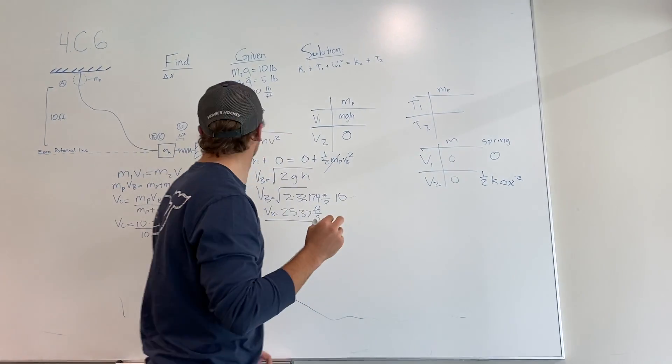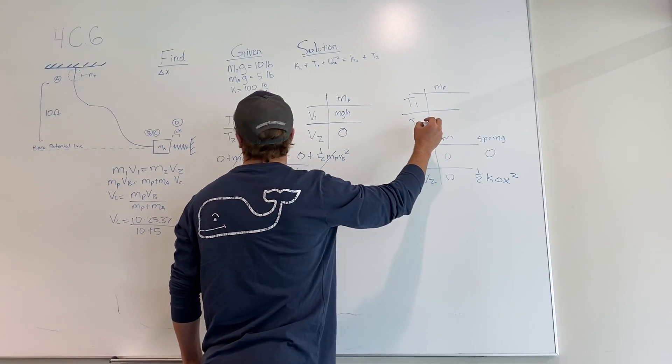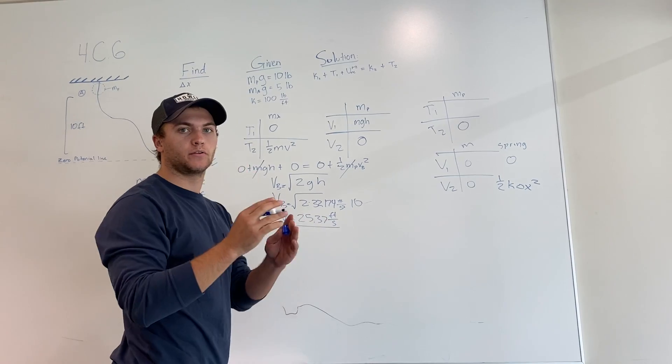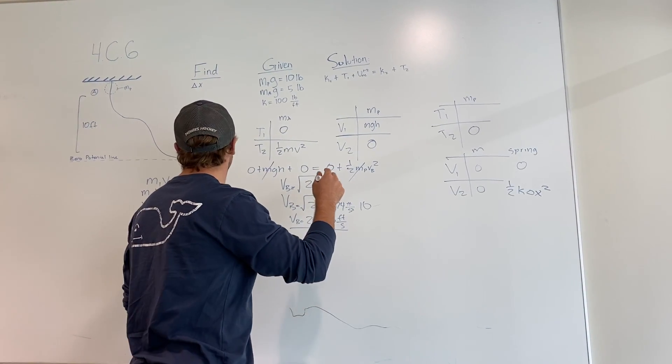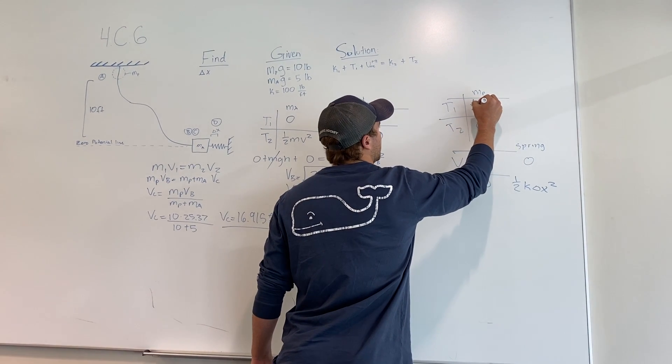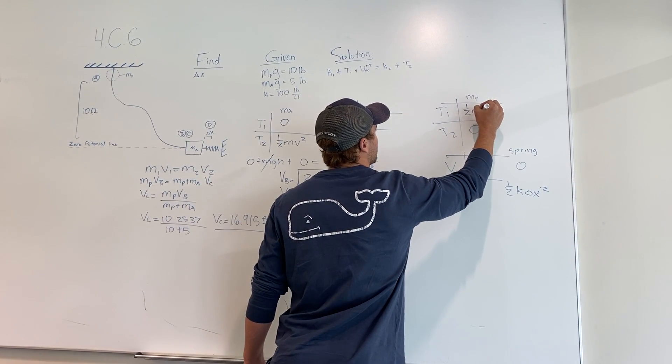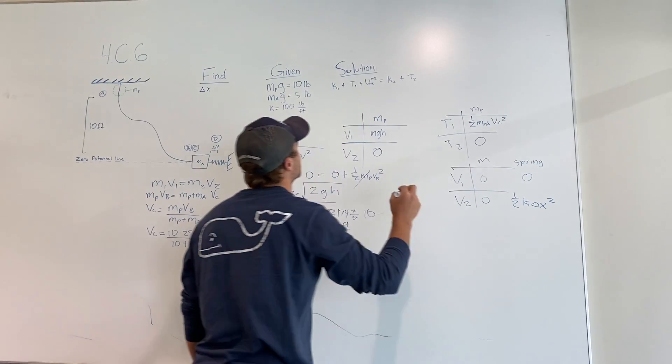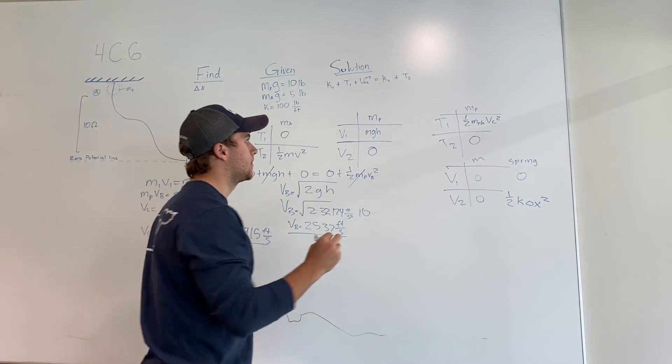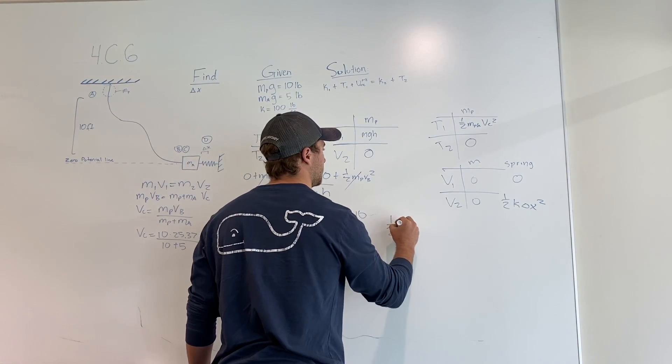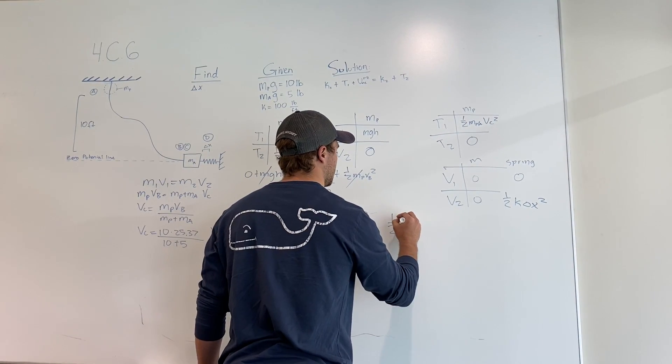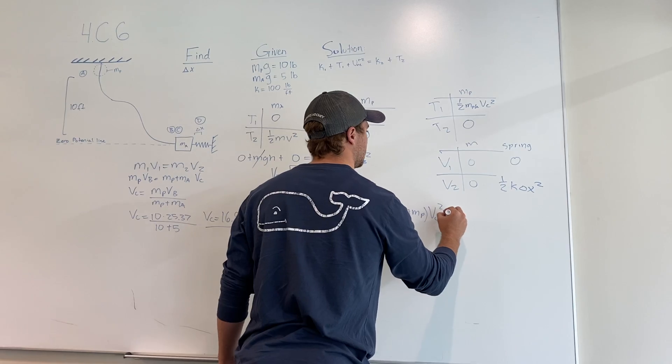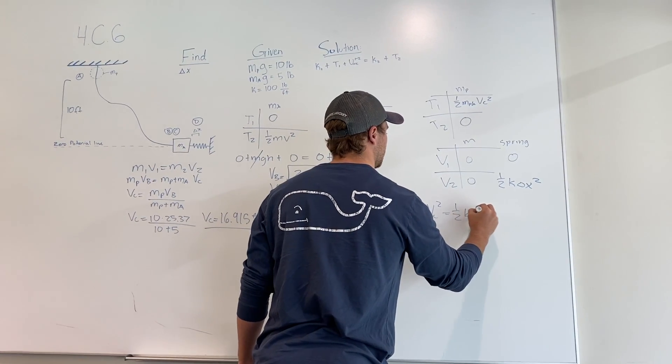And when you take the kinetic energy, there's nothing at point 2 because when the spring is fully compressed, the velocity is zero. And at point 1 is one half M A plus M P times Vc squared. So plugging it into the original work energy equation, you get one half M A plus Mp Vc squared equals one half K delta x squared.